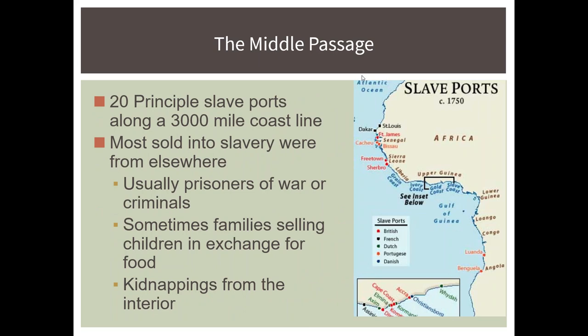You've probably heard of the Middle Passage. There were 20 principal slave markets running from Senegal to Angola, known as the Gold Coast or the coast of Guinea — about a 3,000-mile coastline, with a couple of smaller markets as well. Most of the slaves sold were not from the coast but from the interior. Usually they were prisoners of war or criminals. The ways people became enslaved varied: sometimes it was warfare, sometimes kidnapping — it just depended on the circumstance.